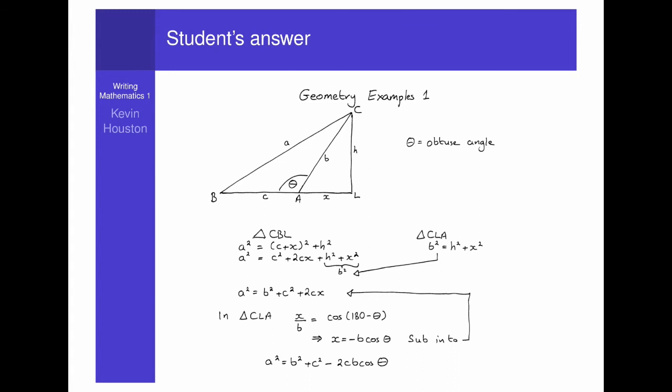Next, if we look back at the student's proof, we can improve it further by putting in some punctuation. There are no full stops in the proof, so it's difficult to know where one idea finishes and the other begins. For example, do they mean a squared equals b squared plus c squared plus 2cx in triangle CLA, full stop, x over b equals cosine 180 minus theta implies, etc.